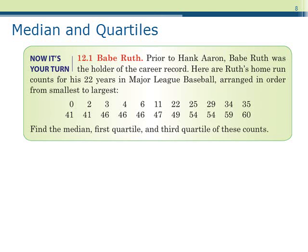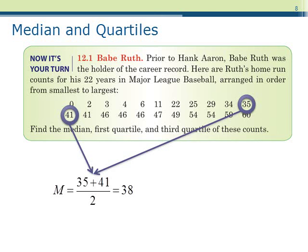Now you try one. Below are the home run counts for Babe Ruth over 22 seasons. The observations are already listed in order from smallest to largest. Find the median, the first quartile, and the third quartile. Because there are an even number of observations, the median is going to be the average of the two center observations. In this case, we get 35 plus 41 divided by 2, which is 38. This is our median.